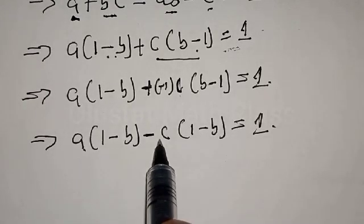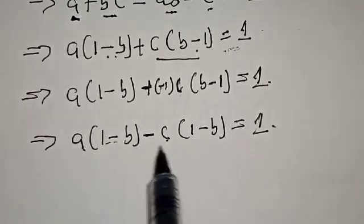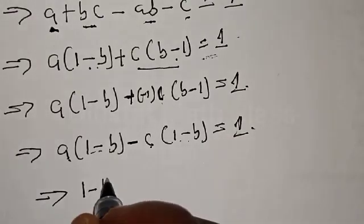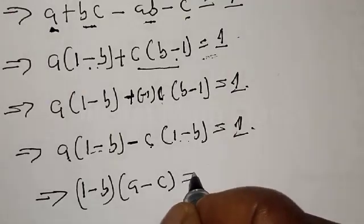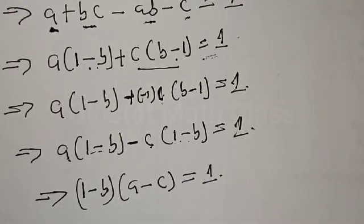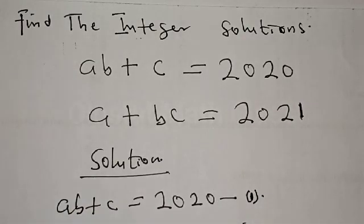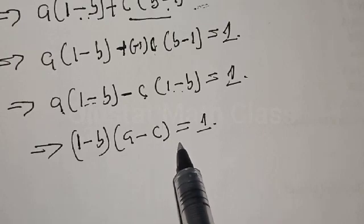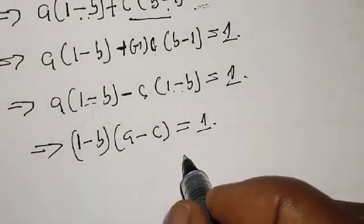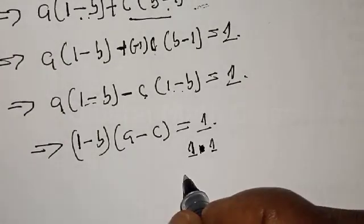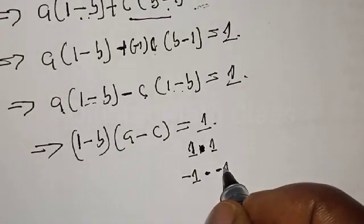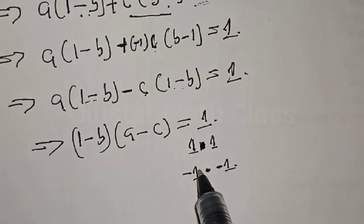Now this is (1 minus B) and this is (B minus 1). To make B minus 1 become 1 minus B, we multiply by minus 1. This gives us A times (1 minus B) minus C times (1 minus B) equal to 1. Factoring out (1 minus B), this implies (1 minus B) times (A minus C) equals 1. Since A, B, and C are all integers, 1 minus B and A minus C are also integers, so we need to find the integer factor pairs of 1.